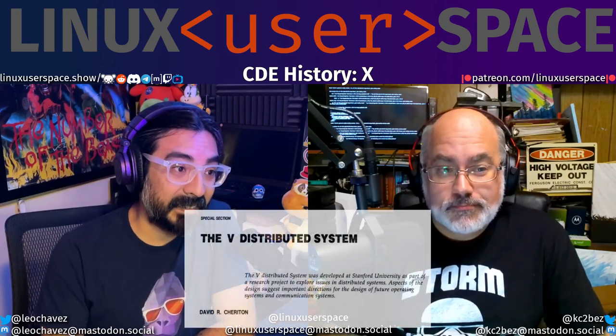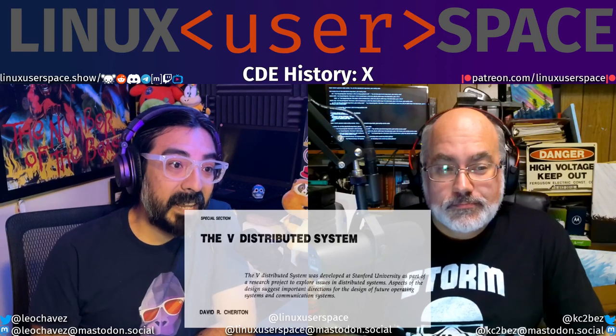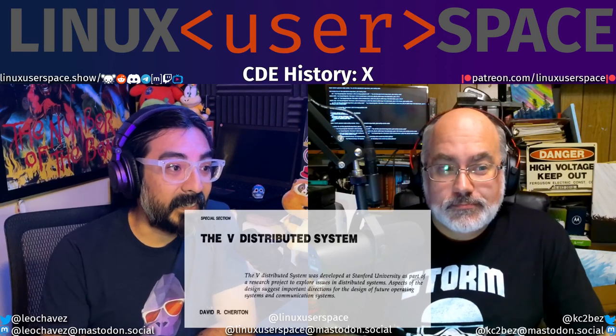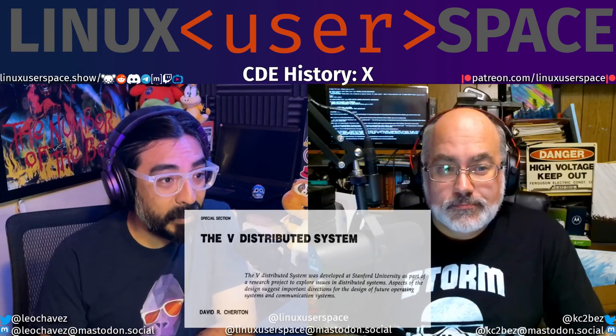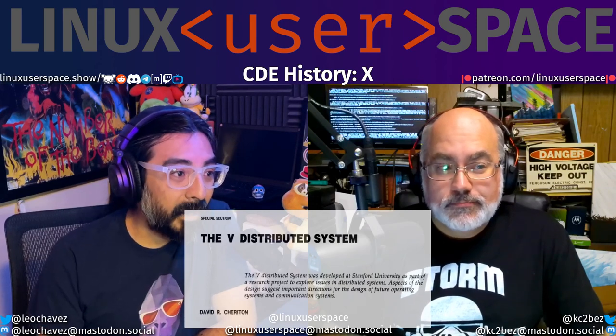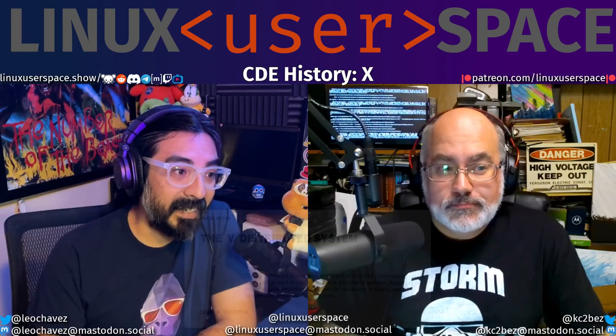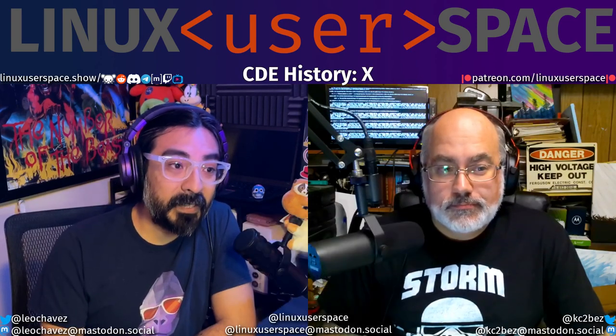W was a windowing system that was originally written for the V operating system. It was developed at Stanford University in the early 80s when hacker porting culture was strong. After a while, Paul Asente and Chris Kent ported W to Unix on the VS-100.